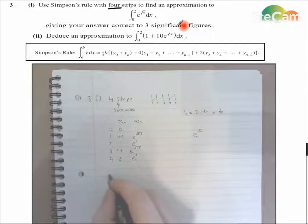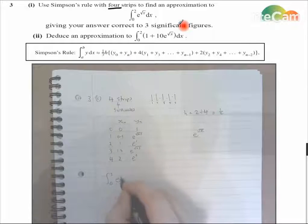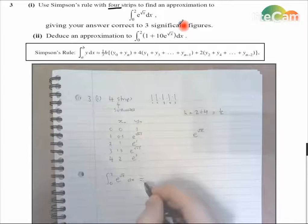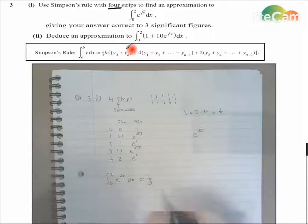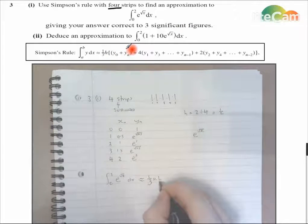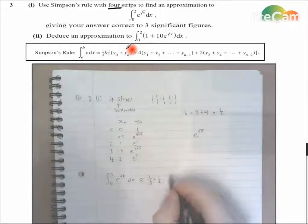So the integral between 0 and 2 of e root x dx is approximately equal to 1/3, and then we've got h, which we've already worked out as a half.